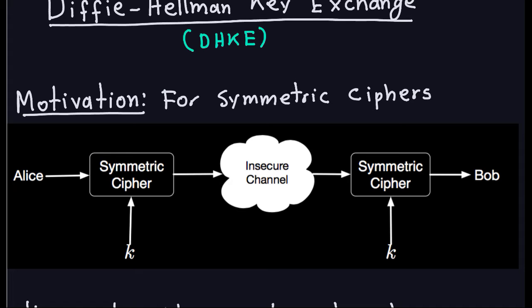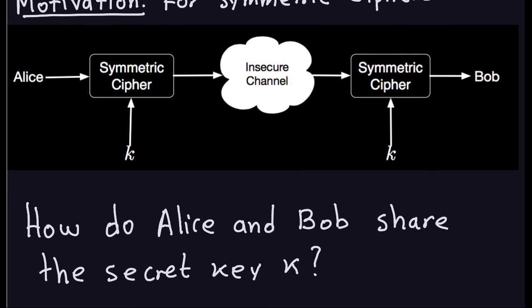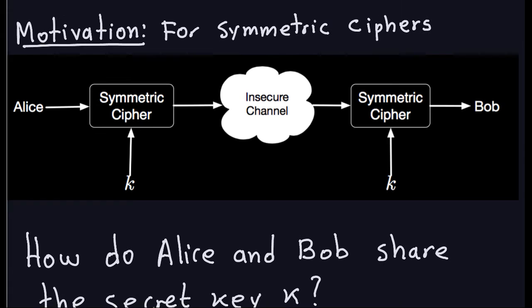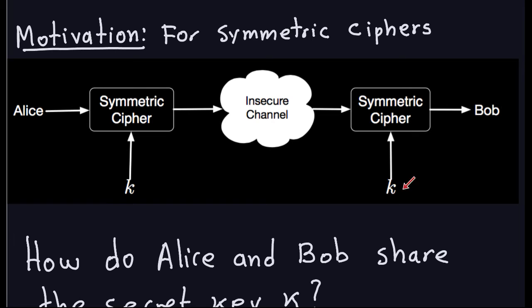If you remember when we were covering the symmetric ciphers, this was the setup. Two parties want to communicate through an insecure channel. Now, if they agreed to use a symmetric cipher — whatever that symmetric cipher might be, DES or any of the other symmetric ciphers — one of the characteristics of symmetric ciphers is that they use the same key for encryption and decryption. One of the problems in this setup is: how do the two parties share the secret key? They can't send the key through the insecure channel in plain text, because it will defeat the purpose of the symmetric cipher.